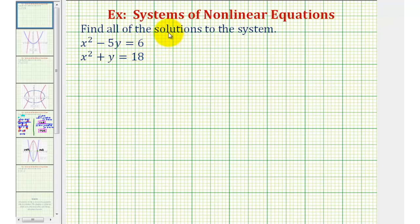Welcome to an example on how to solve a system of nonlinear equations. We want to find all of the solutions to the system x squared minus five y equals six, and x squared plus y equals 18.